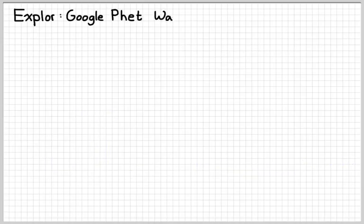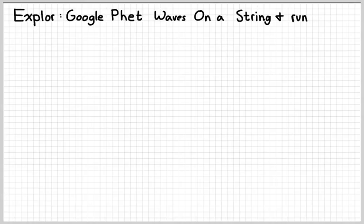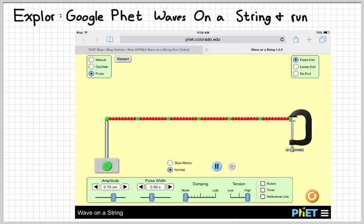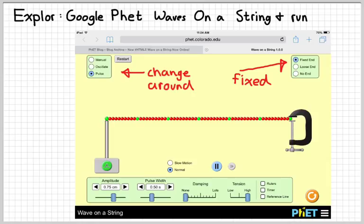What you might want to do — and this would really help your understanding — is go to a simulator. We've used the PhET simulators before. The easiest way to get there is just to Google the phrase PhET — P-H-E-T — and then 'waves on a string.' If you're on an iPad, iPhone, or tablet of some kind, you'll want to find the HTML5 version of that app. When you run the app, it kind of looks like this. You can change between manual control, oscillatory control, and a pulse control.